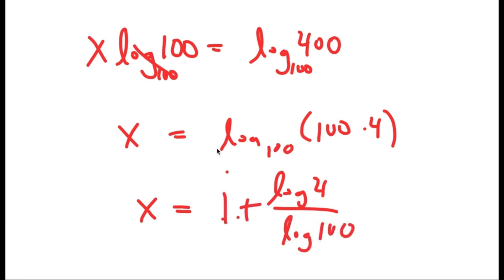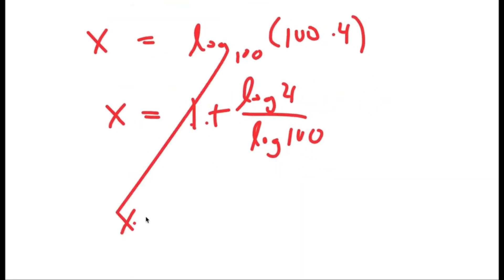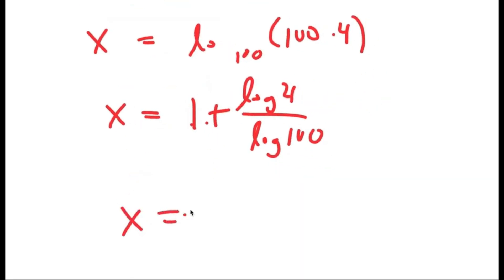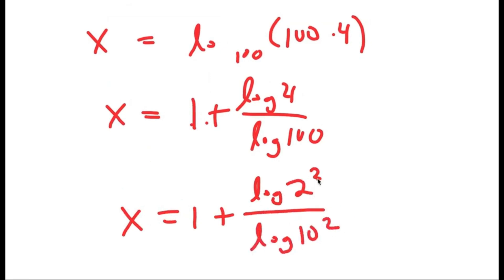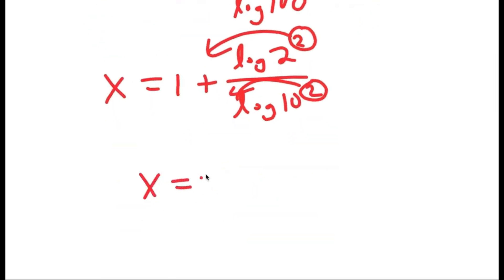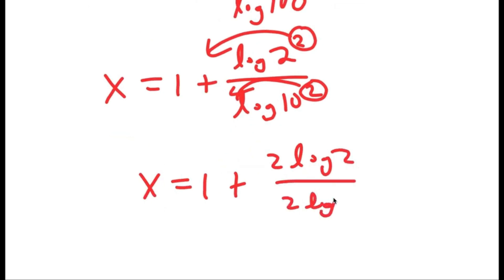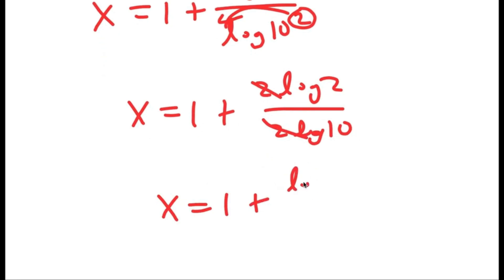I can rewrite this as log base 100 of 100 times 4, which is equal to log of 4 over log of 100, and I have 1 plus this. Now, log of 4 is the same thing as log of 2 squared, and log of 100 is the same thing as log of 10 squared. So I can move the 2 to the front in each, and I get x is equal to 1 plus 2 log 2 over 2 log 10. These twos cancel out, so I get x is equal to 1 plus log 2 over log 10.